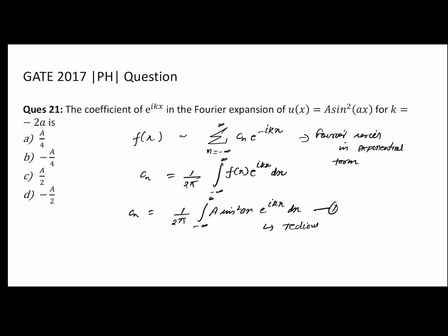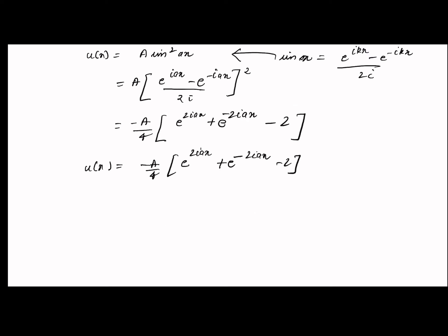They asked for the coefficient of e^(ikx), so they have asked for the coefficient of e^(i(-2a)x), which is basically the coefficient of e^(-2iax). That is -A/4.